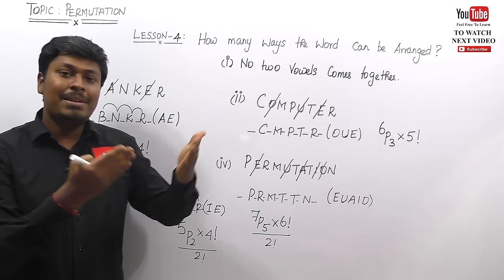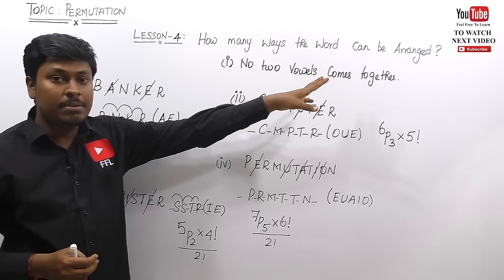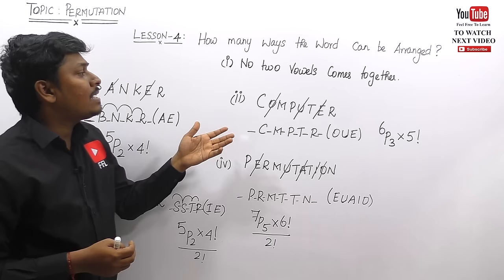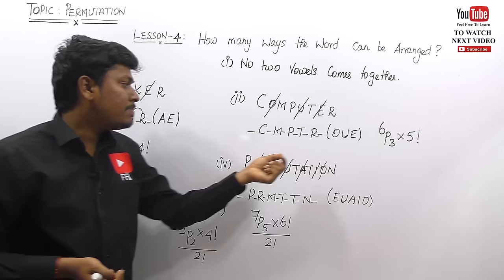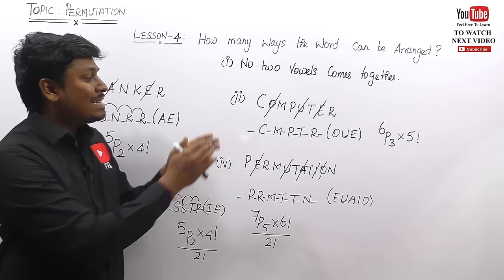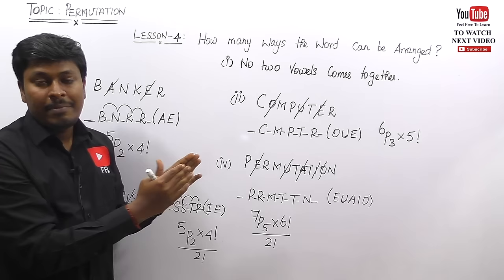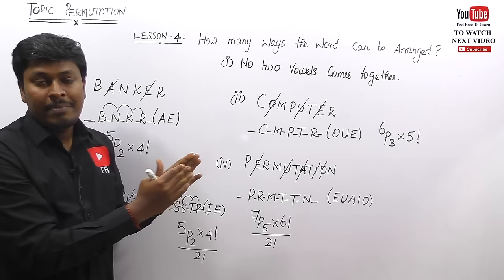If they ask about 'no two consonants come together,' apply the same logic but place the consonants inside the bracket. Similarly, if two specific letters like O and M should not come together, place O and M in the bracket. Whatever letters they specify, place them in the bracket, write the remaining letters, count the gaps, and apply the formula. Always remember: if there are repeated letters, divide by their factorial.